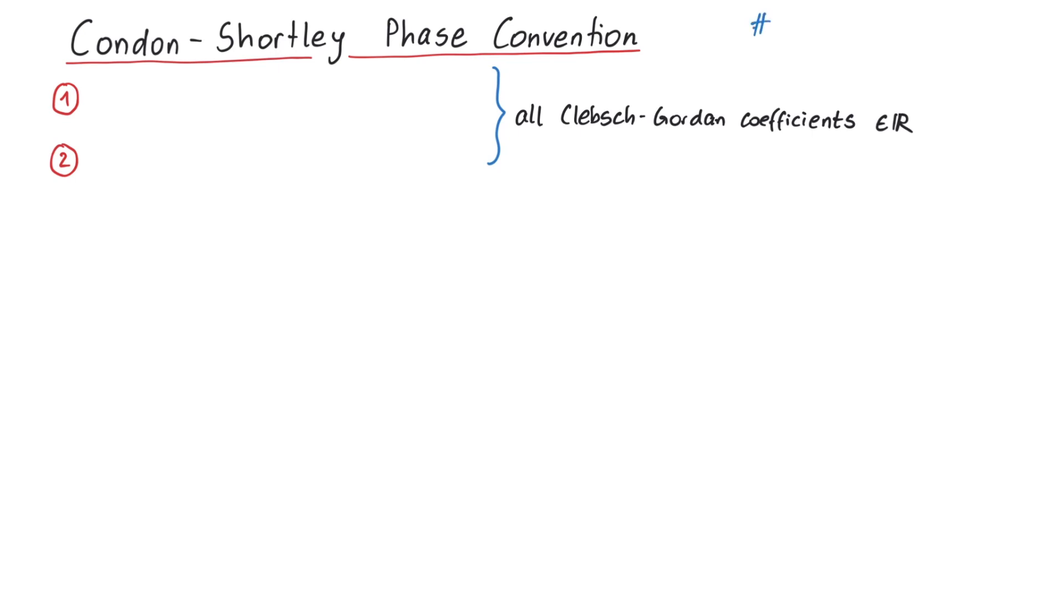It's named after the US physicists Edward Condon and George Shortley, who introduced this convention in a textbook called The Theory of Atomic Spectra.